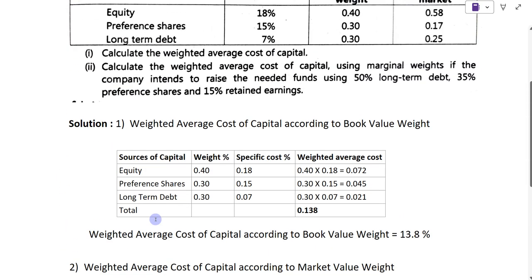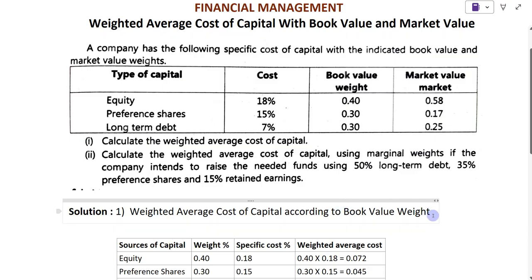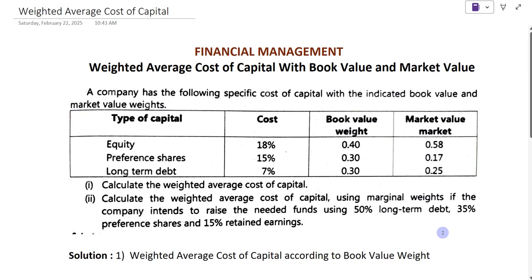In this way, you have to calculate the weighted average cost of capital with book value and market value. I hope students, you have understood this example. Thank you very much. Please subscribe to my YouTube channel, like and share the video, and do not forget to press the bell icon to get the latest notifications.